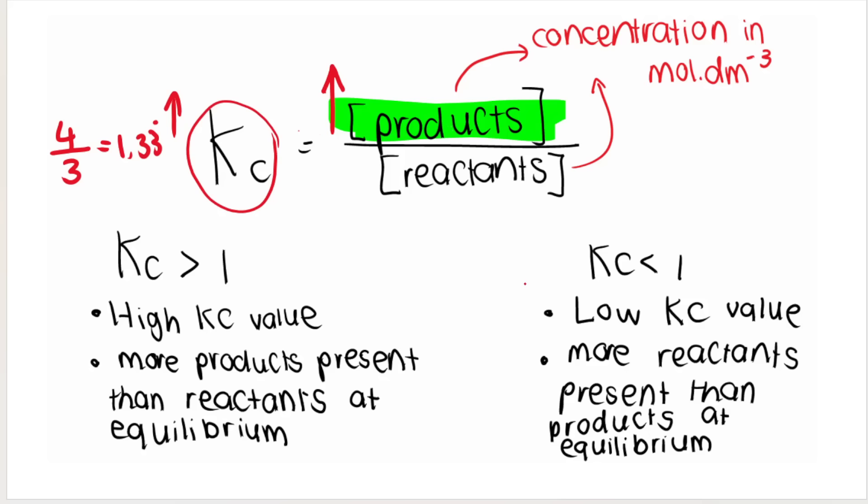However, if at equilibrium, I have more reactants than products, which can happen, if the reverse reaction is maybe favored, I have more reactants, so my denominator is now bigger.